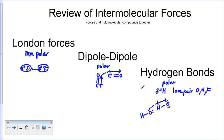An important point is that all molecules will have London forces, since these arise from electrons randomly shifting in any molecule. When discussing intermolecular forces, we tend to focus on the strongest of the three. So if hydrogen bonds are possible, we focus on those; if dipole-dipole are possible, we focus on those; and if only London forces are possible, that's what we focus on.